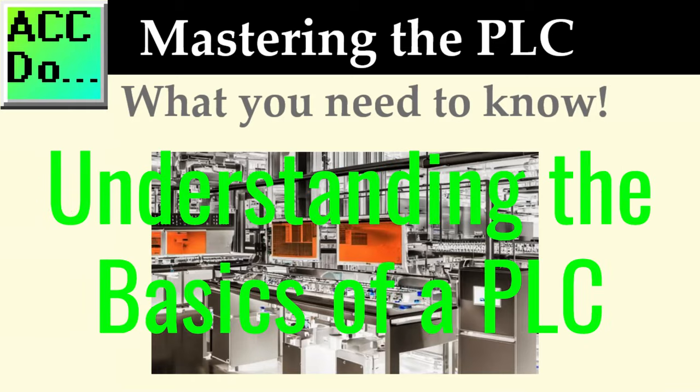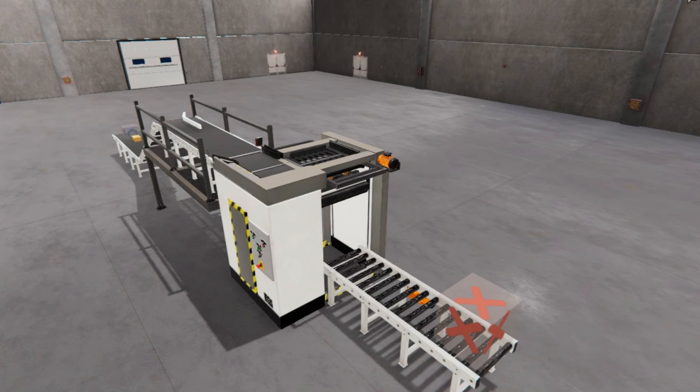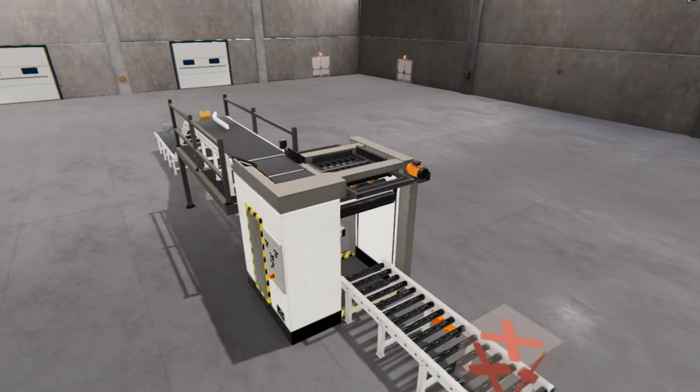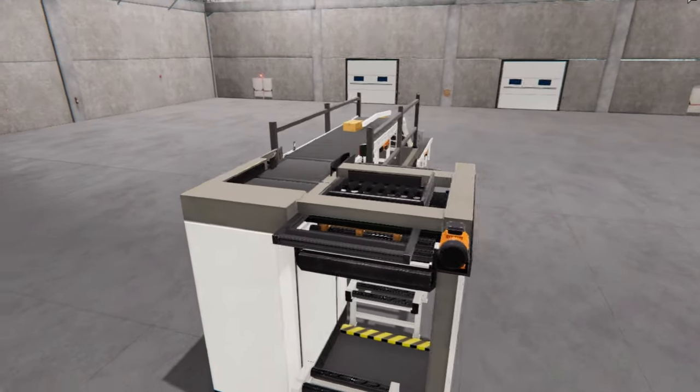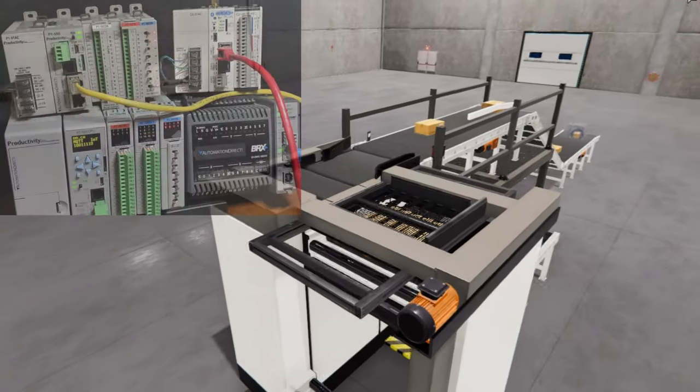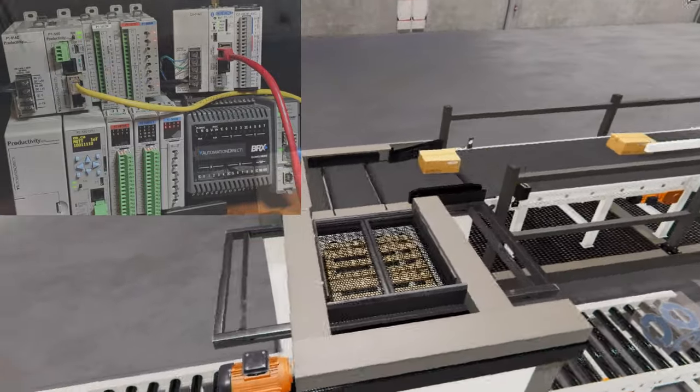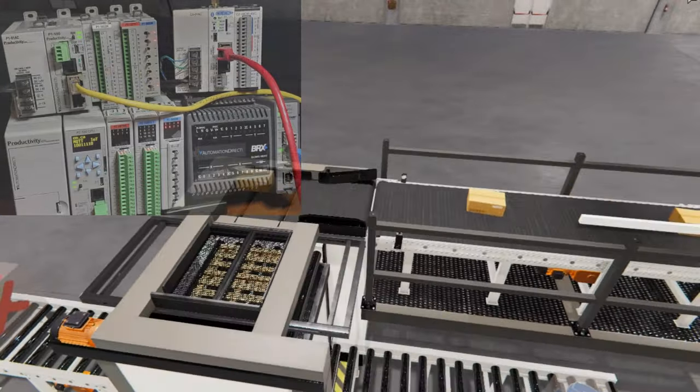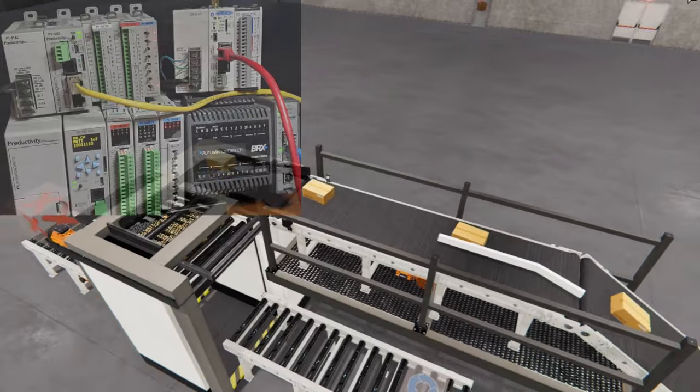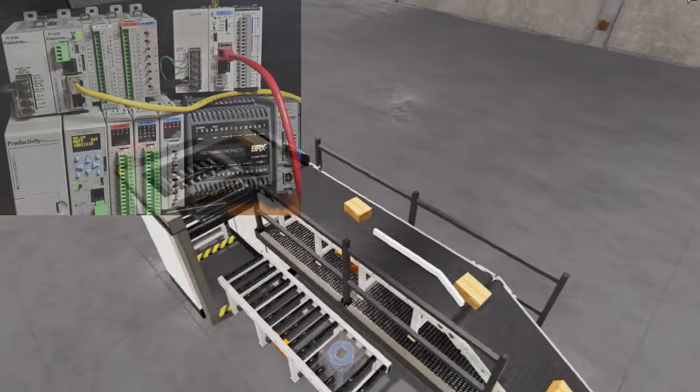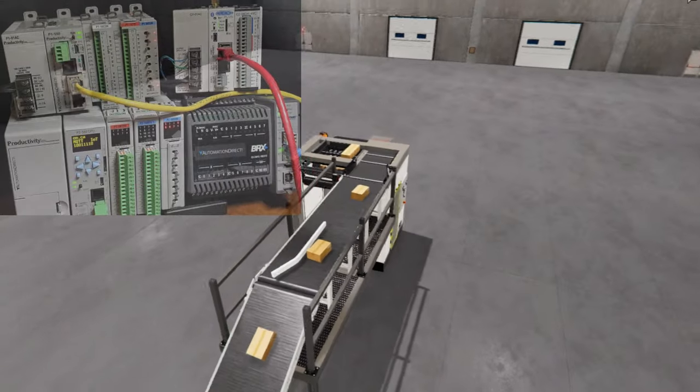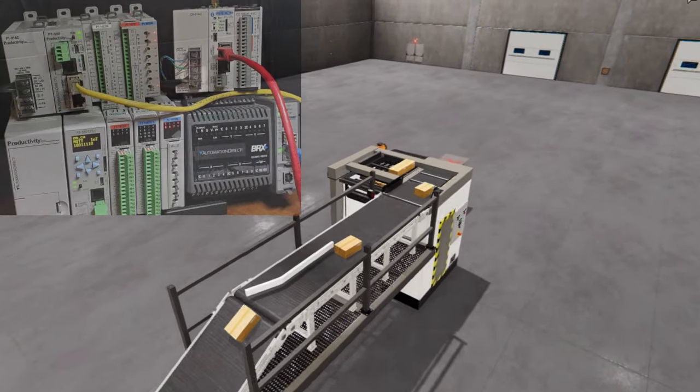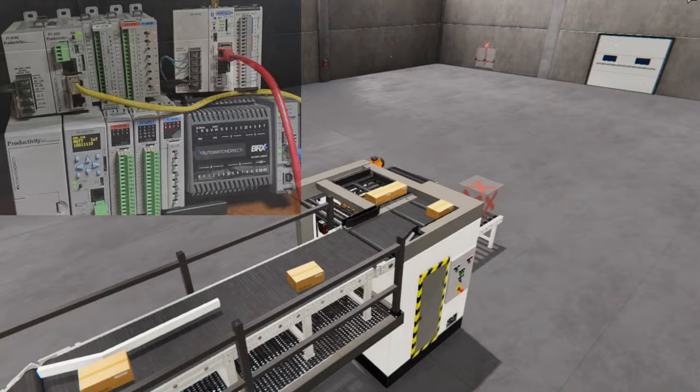Understanding the basics of a PLC: Programmable logic controllers (PLCs) are industrial digital computers modified to control manufacturing processes such as assembly lines or robotic systems. These computers are designed for special tasks and can withstand harsh environments, making them excellent choices for heavy-duty industrial applications.